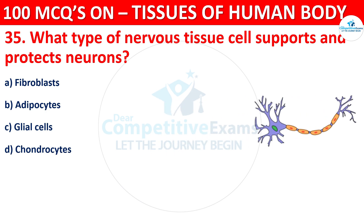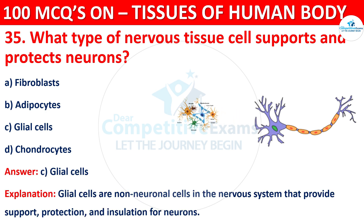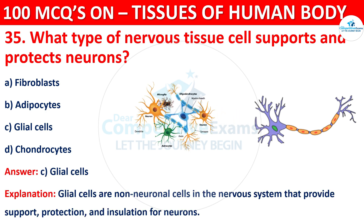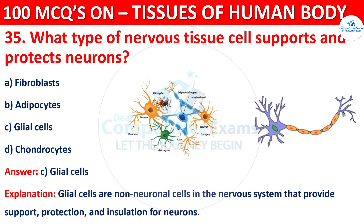The correct answer is C, that is Glial Cells. Glial cells are non-neuronal cells in the nervous system that provide support, protection, and insulation for neurons.